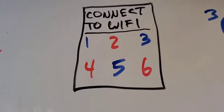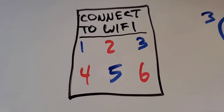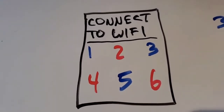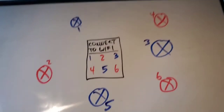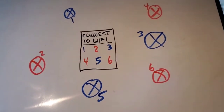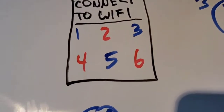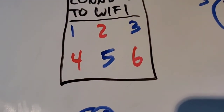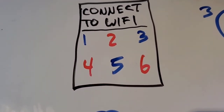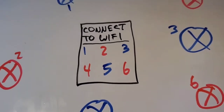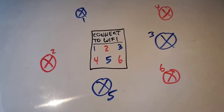On dual-band devices, when you connect to Wi-Fi and it gives you a list of available networks in your area, the device will show all the Wi-Fi networks — both 2.4 gigahertz and 5 gigahertz — all on the same screen in one list, and it'll see all the networks.